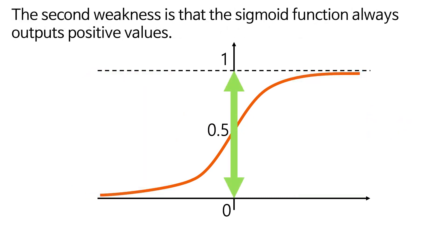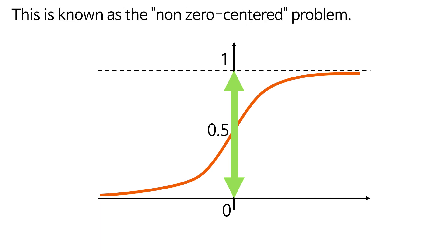The second weakness is that the sigmoid function always outputs positive values. This is known as the non-zero-centered problem. Why is this an issue?